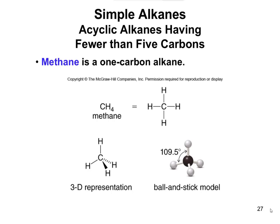Looking at the 3D representation of methane: the wedged line means that hydrogen is coming out towards you, out of the plane of the screen. The dashed line in the back means that hydrogen is going away from you. The ball-and-stick model reminds you of the bond angles and the fact that it has tetrahedral geometry. Most carbons are going to have tetrahedral geometry, particularly if they don't have any double bonds.